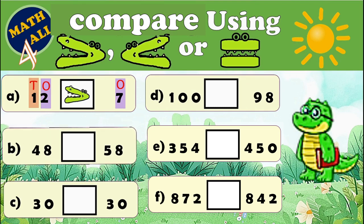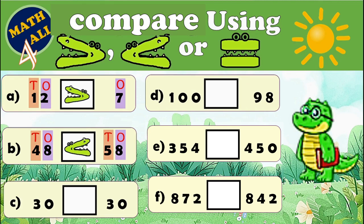Example B: 48 and 58. Now we have two two-digit numbers. What should we do? We will look at the biggest place value in each number — the tens place. The first number has 4 in the tens place, and the second number has 5 in the tens place. Which one is bigger, 4 or 5? It's 5! So Number Gator goes toward 58. This symbol looks like the letter L — less than. So 48 is less than 58.